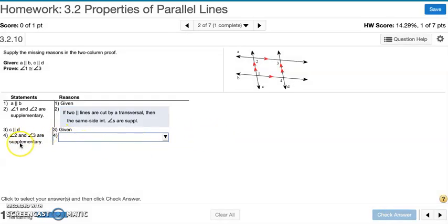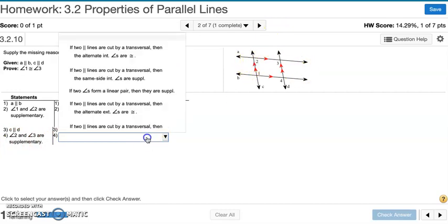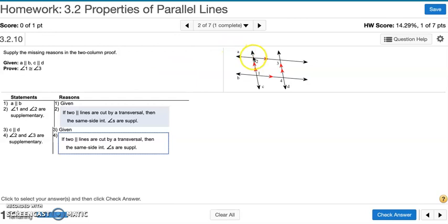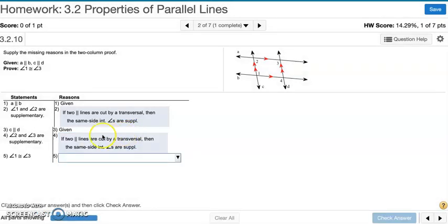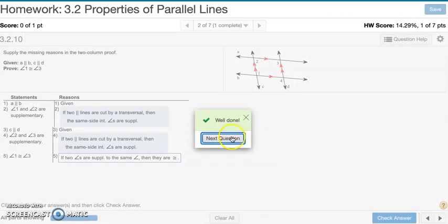Now we're also told in the statement that angles 2 and 3 are supplementary. Same deal. They are also same-side interior angles, and they're supplementary for that reason. So if two angles are supplementary to the same angle, they are going to be congruent to each other. And that is number 2.